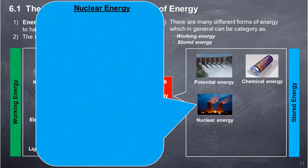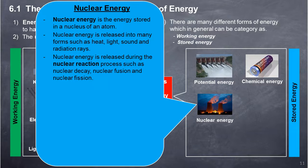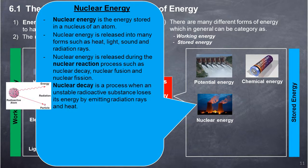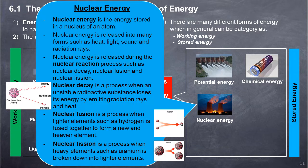Nuclear Energy: Nuclear energy is the energy stored in the nucleus of an atom. Nuclear energy is released in many forms, such as heat, light, sound, and radiation rays. Nuclear energy is released during nuclear reaction processes such as nuclear decay, nuclear fusion, and nuclear fission. Nuclear decay is a process when an unstable radioactive substance loses its energy by emitting radiation rays and heat. Nuclear fusion is a process when lighter elements such as hydrogen are fused together to form a new and heavier element. Nuclear fission is a process when heavy elements such as uranium are broken down into lighter elements.